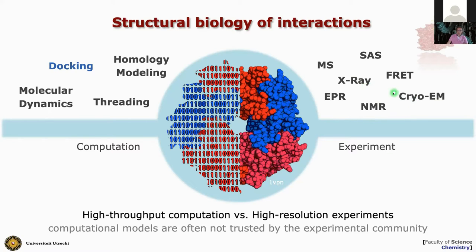These three methods give you access to the full structure of a complex. But next to those key methods, you also have many experimental methods that provide pieces of the puzzle. Mass spectrometry is moving toward structural methods — you can detect crosslinks between molecules, which provide distances. These may not be sufficient alone to solve the full structure, but they provide pieces of information. Similarly, scattering methods like small-angle X-ray scattering or neutron scattering provide information about molecular shapes but not atomistic details. Combining this type of information with computational methods, you can characterize interactions.